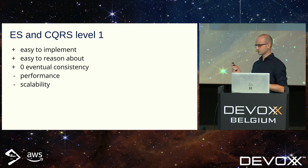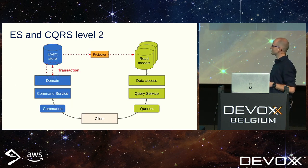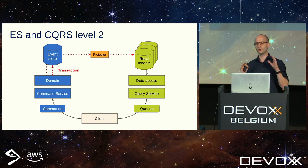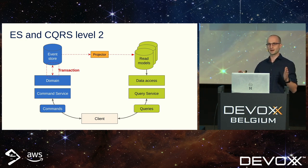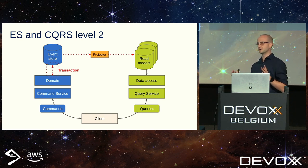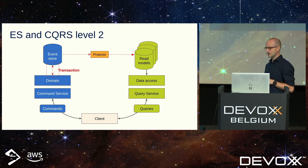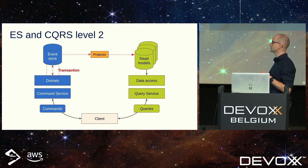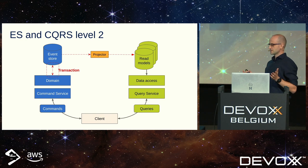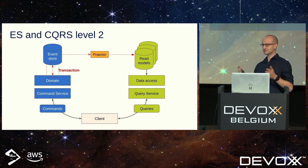Second level: this time the scope of the problematic transaction is much smaller — we are saving only events in the transaction, so it's an append-only operation and basically any database will love to handle it. It's a super fast operation if you just write new events. So we definitely improved the command service side. There is a new piece on the diagram: a projector — something needs to read new events and update various read models — and you can scale this part because you can launch hundreds of projectors.